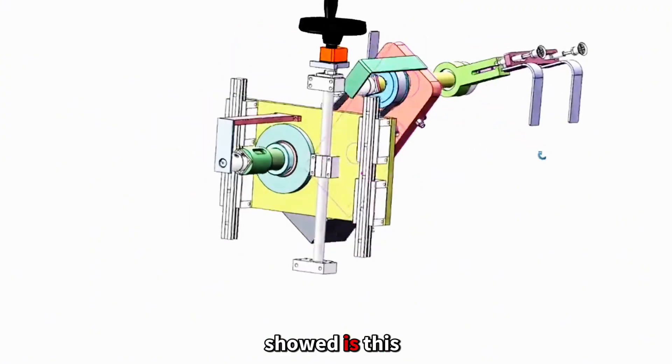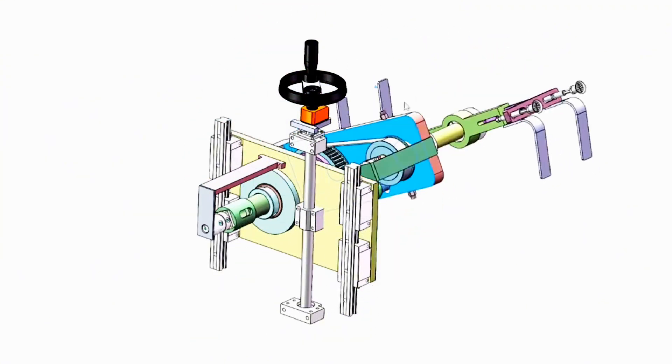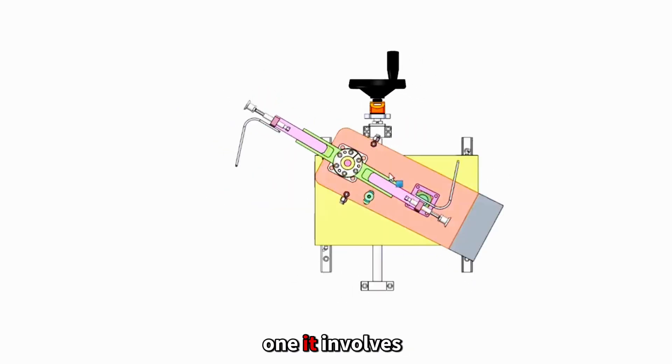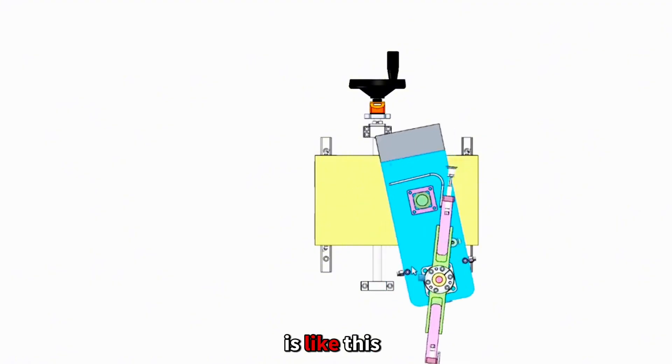As you just showed, is this a curve box mechanism used in an automatic cartoning machine? What about this one? It involves this music box, pre-order box, and then this. Then the feeding is like this.